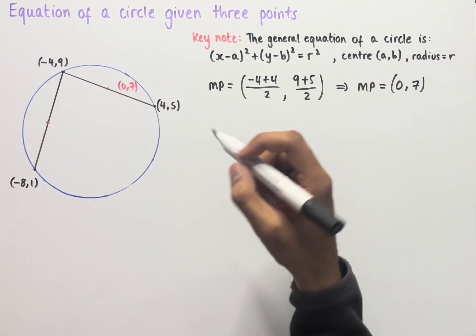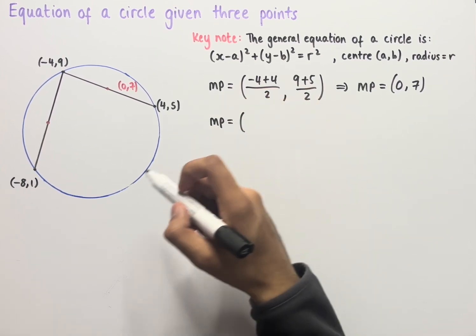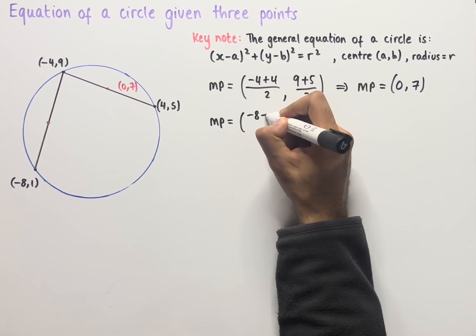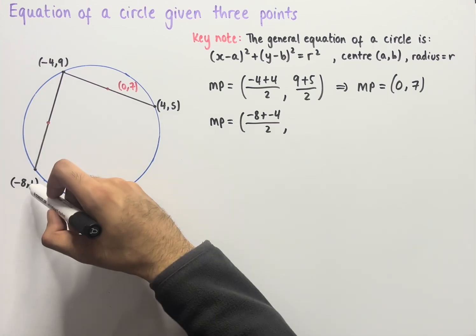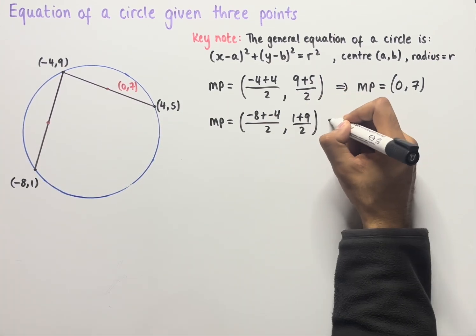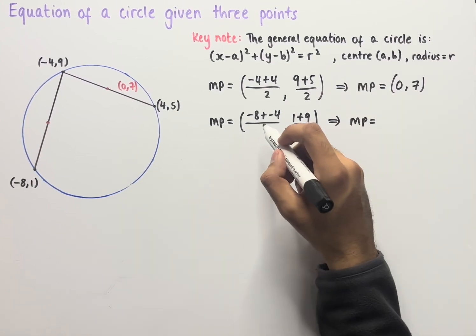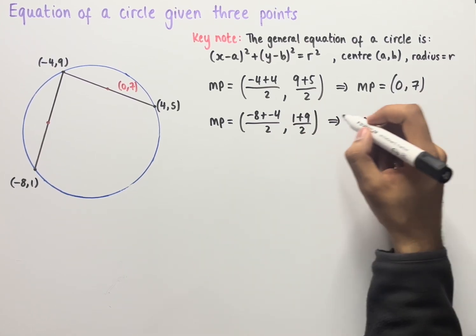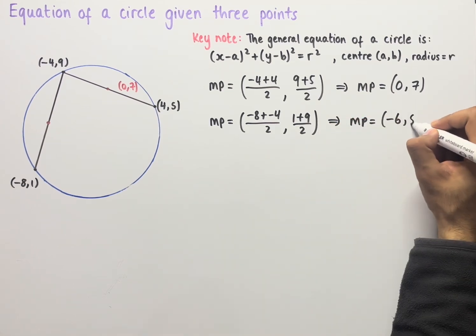Finding the midpoint of the other chord, MP equals (-8 + -4) / 2 for the x-coordinates and (1 + 9) / 2 for the y-coordinates. Simplifying, -8 + -4 is -12, divided by two is -6, and 1 + 9 is 10, divided by two is five. So the midpoint is (-6, 5).